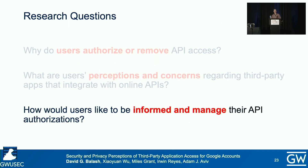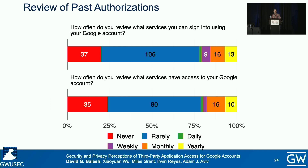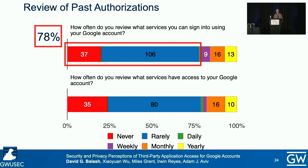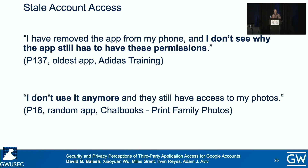Lastly, we found that people never or rarely review single sign-on or third-party app authorizations, and this can lead to concerns about stale account access. Participant 137 complained about their Adidas training app: 'I have removed the app from my phone, and I don't see why the app still has to have these permissions.' Participants were concerned because they equated removal of mobile apps on their phone with the removal of API authorizations and were surprised when that wasn't the case — their account with that app continues on, and that is what has the API access. Participant 16 said of the Chatbooks app: 'I don't use it anymore, and they still have access to my photos.'